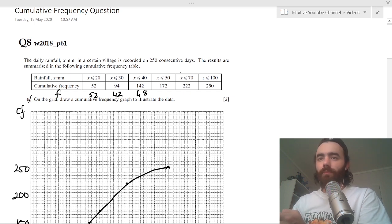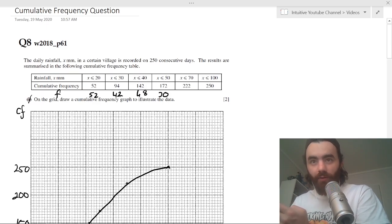Then for the next one would be 142 minus 94, so the next frequency would be 48. Then between 40 and 50, you do 172 minus 142, that's 30. So these are the frequencies.